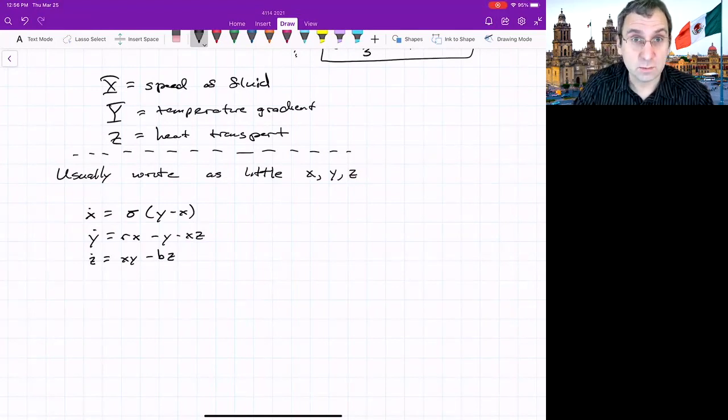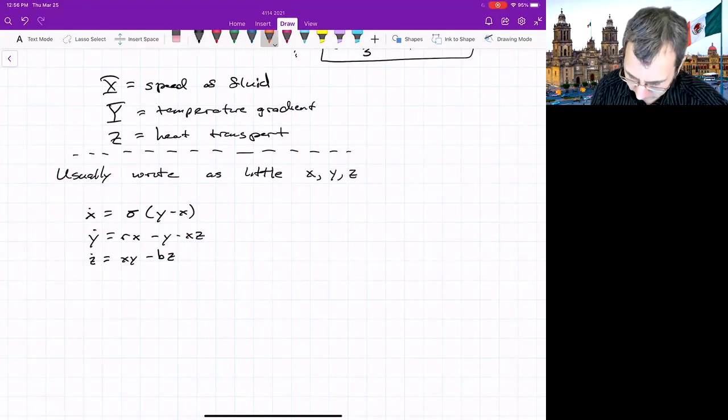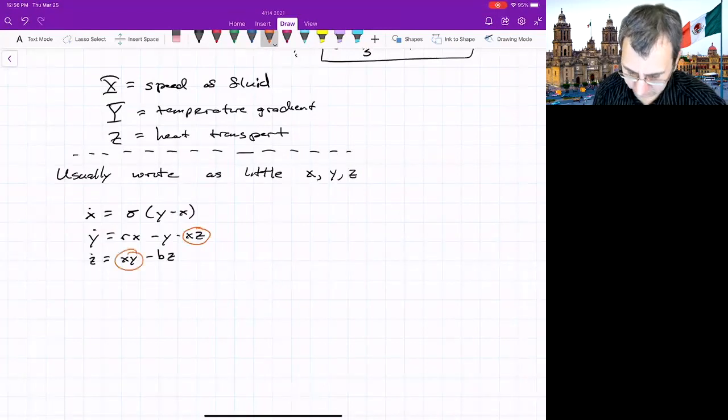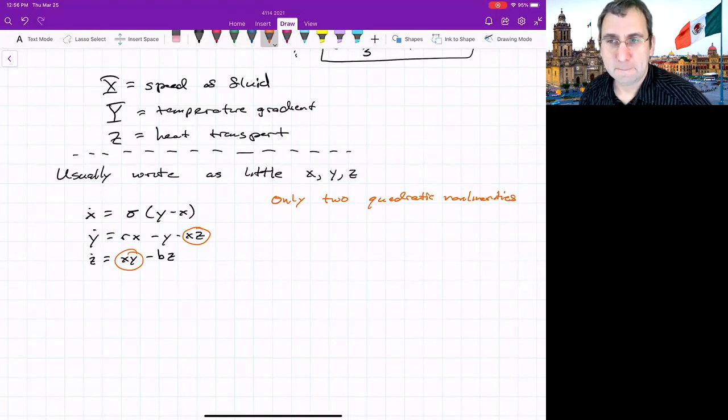There's just two nonlinear terms. So you might think, oh, what's the big deal? There's just two nonlinear terms. Where are they? The only things that aren't linear are there. There's this and this. So there's only two quadratic nonlinearities. But that's enough to lead to all kinds of interesting things.